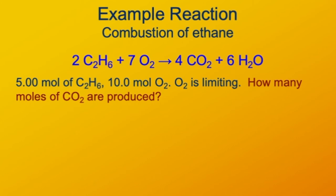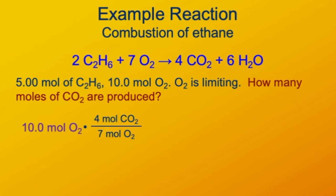In the same situation — 5 moles of C₂H₆ and 10 moles of oxygen with oxygen limiting — how many moles of carbon dioxide are produced? This is based on the moles of oxygen present. Starting with 10 moles of oxygen and using the ratio of 4 moles of CO₂ for every 7 moles of O₂, the moles of O₂ cancel out and we get 5.71 moles of CO₂ produced when 10 moles of oxygen are consumed combusting ethane.